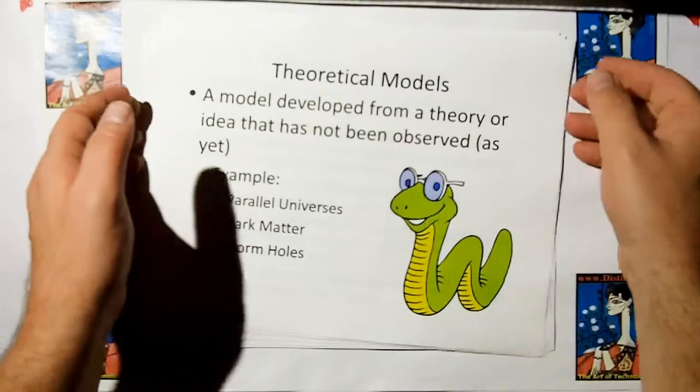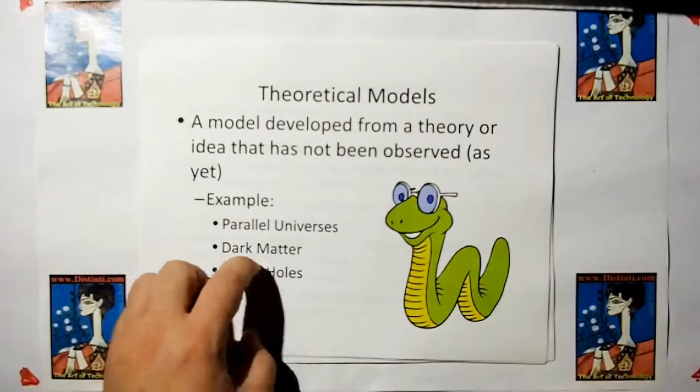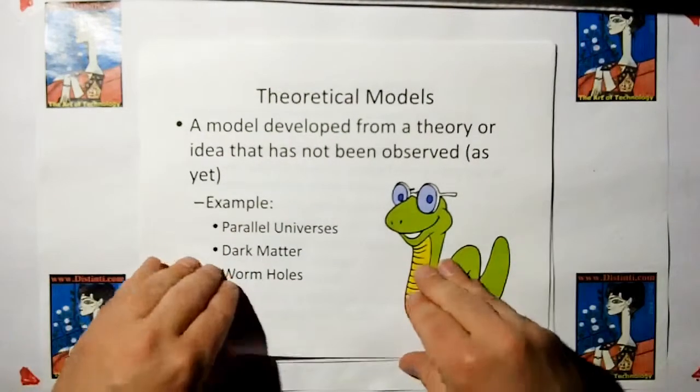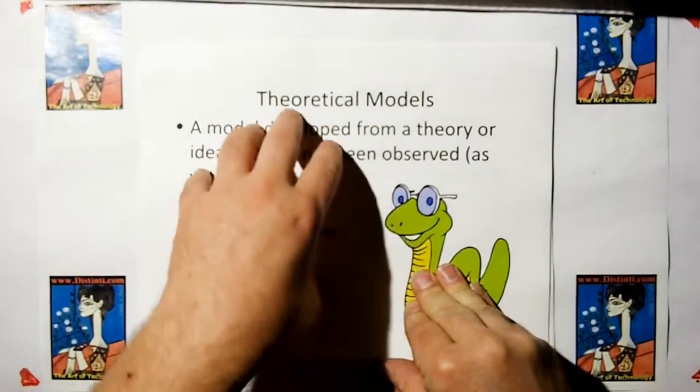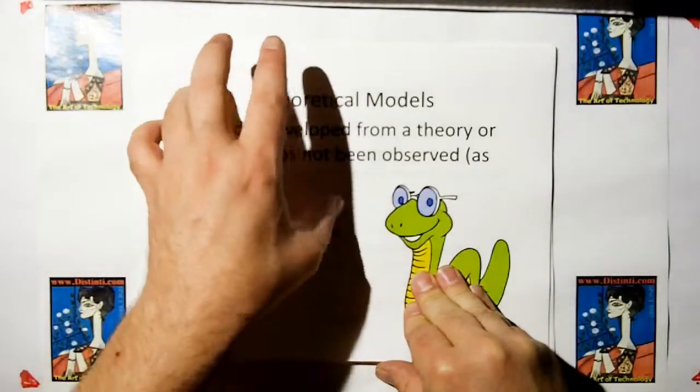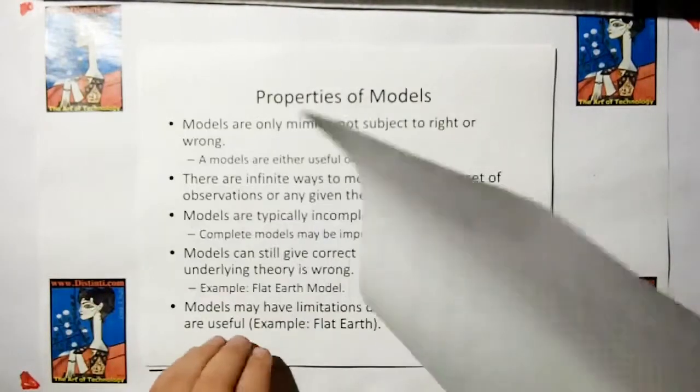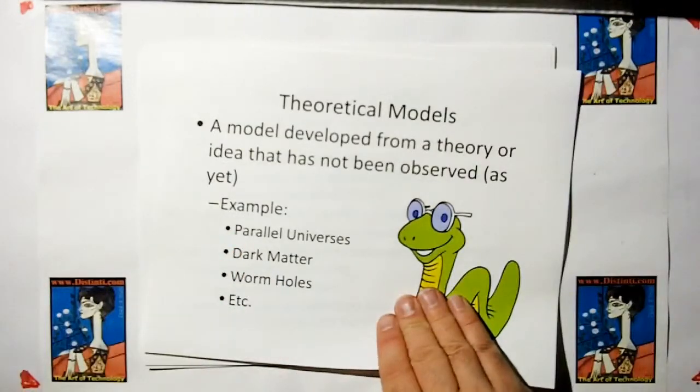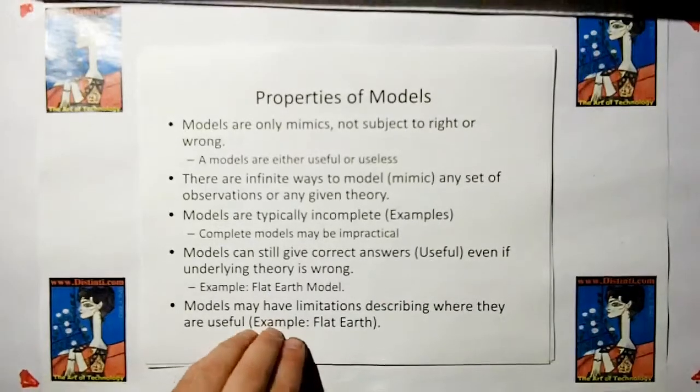And then you have theoretical models. It's a model developed from a theory that has not yet been observed, like parallel universes, dark matter, wormholes. These are models that are derived mathematically from other models. Just because you can derive something mathematically from other models doesn't mean it exists. It might be there, but until you actually see it, you can't say it's true yet.